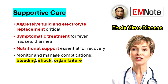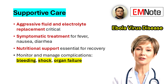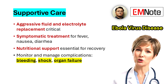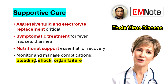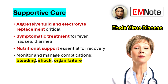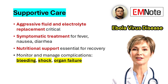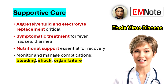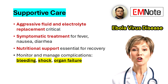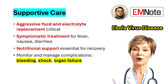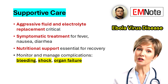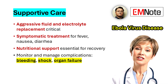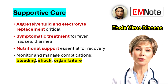Symptomatic treatments target fever, pain, nausea, vomiting, and diarrhea. Monitoring and managing complications such as bleeding, shock, and organ failure are necessary. Blood transfusions and treatment for co-infections such as malaria may be required.